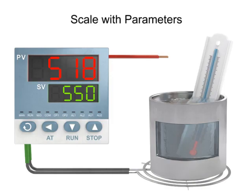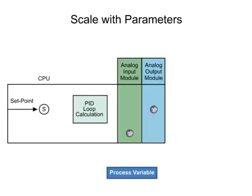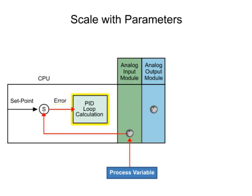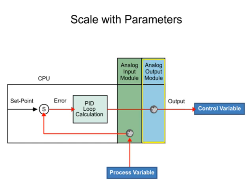PID control is a common closed-loop system used to maintain physical properties such as pressure and temperature in automated processes. The PID instruction controls the closed-loop by comparing the input or process variable from an analog input module to the system set point. The difference between the set point and the process variable is referred to as error. The error is analyzed by the PID loop calculation and provides an output or control variable to an analog output module to meet the set point defined by the system requirements.